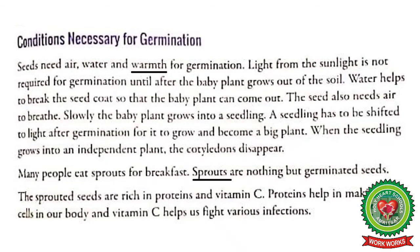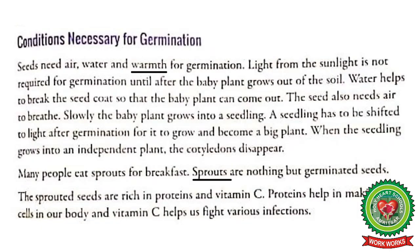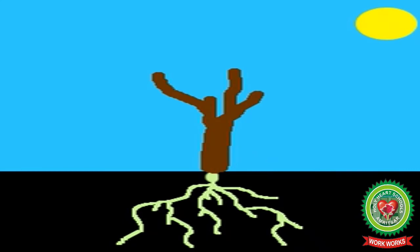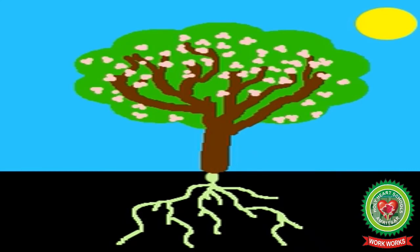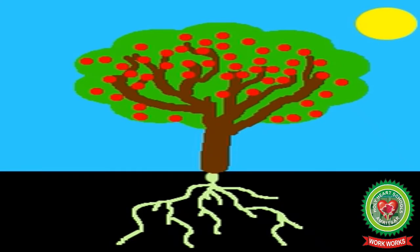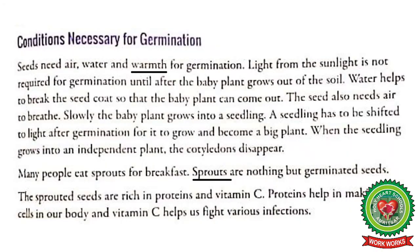Then the shoot grows upward towards the sunlight. Seeds also need air to breathe. Leaves appear on the shoot and this young plant is now called a seedling. A seedling is to be shifted to light after germination for it to grow into a big plant. After the leaves appear, the cotyledon dries up and falls off, and the seedling grows into a new plant.